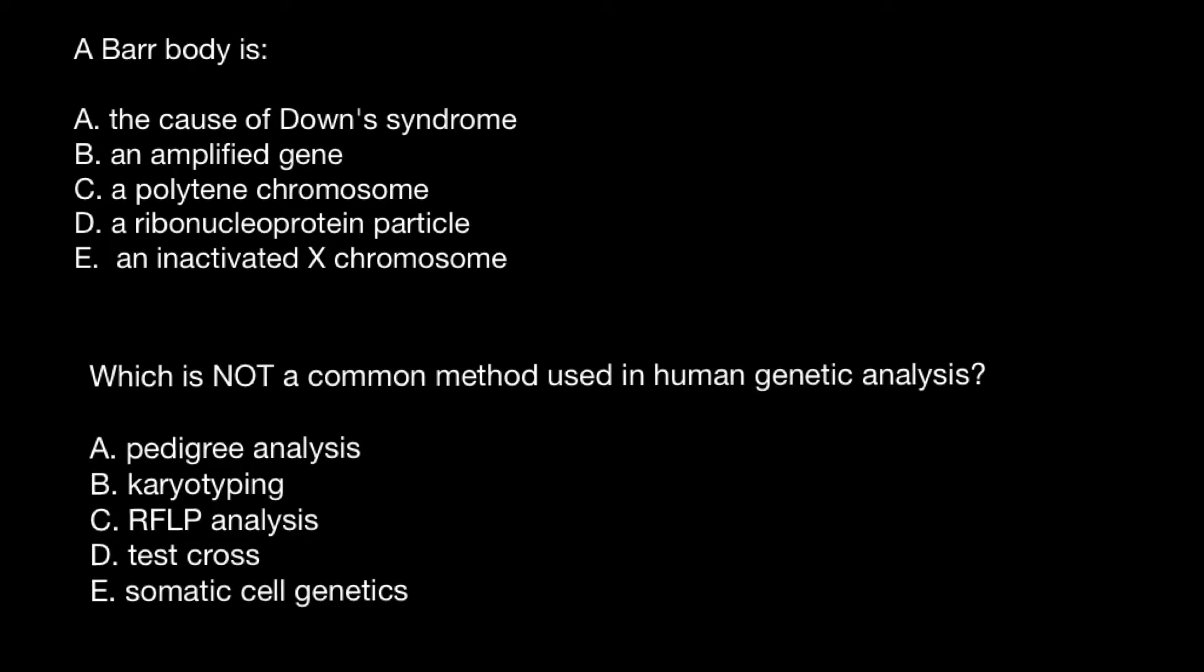You can compare your answer with my answer and explanation. Here is the first statement: a Barr body is. Answer A, the cause of Down syndrome. Down syndrome is caused by trisomy of chromosome 21, so we can cross out this answer.